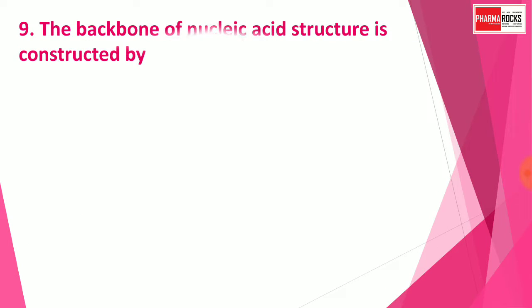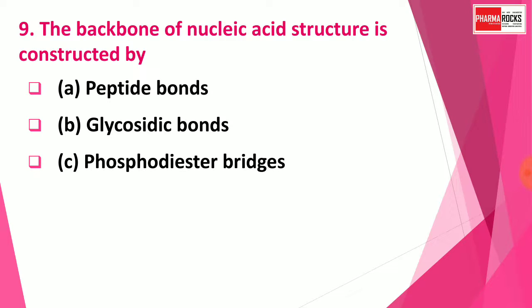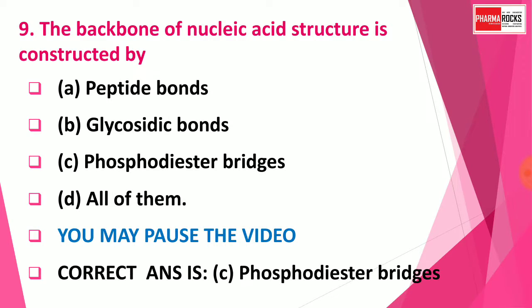Question number 9: The backbone of nucleic acid structure is constructed by — Option A: Peptide bond, Option B: Glycosidic bonds, Option C: Phosphodiester bridge, Option D: All of the above. The right answer for this question is Option C: Phosphodiester bridge. The backbone of nucleic acid in the structure of DNA is constructed by the phosphodiester bridge.